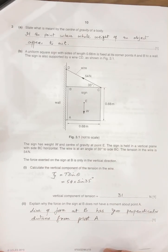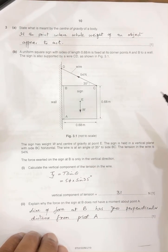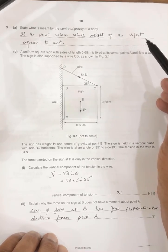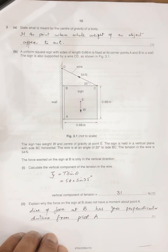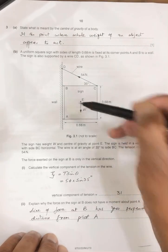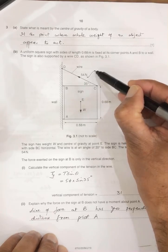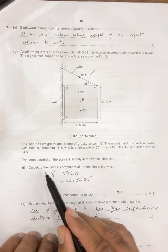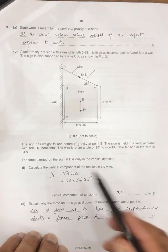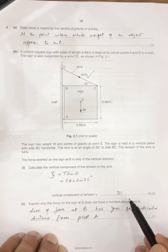Now, the next question number 3 is state what is meant by the center of the gravity, so it is a point where a whole weight of the object appears to act, appears to lie. Now, in this question, this is a sign board, and it is held stationary with this cable with tension 54, and the first part is calculate the vertical component of the tension. So Ty is T sine theta, so 54 sine 35, this is 31.